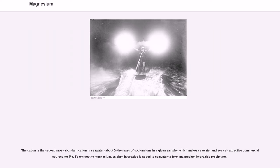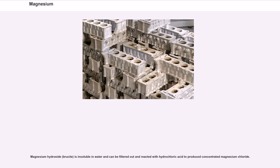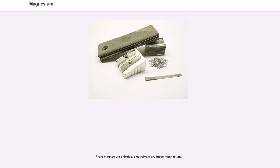To extract the magnesium, calcium hydroxide is added to seawater to form magnesium hydroxide precipitate. Magnesium hydroxide, brucite, is insoluble in water and can be filtered out and reacted with hydrochloric acid to produce concentrated magnesium chloride. From magnesium chloride, electrolysis produces magnesium.